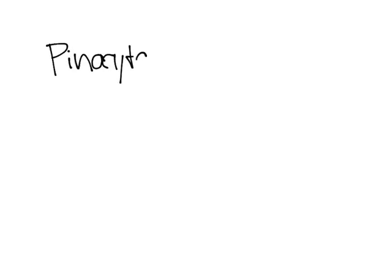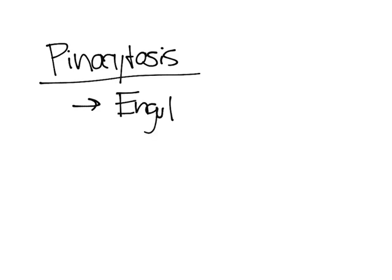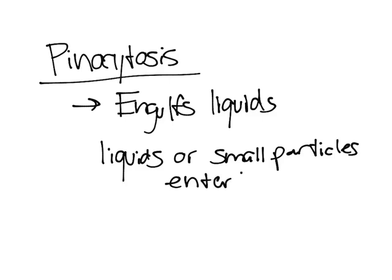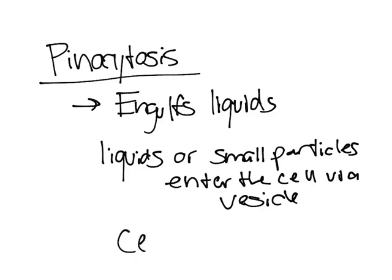Another type of endocytosis is pinocytosis. This is the same process as phagocytosis, but the key difference is that it engulfs liquids — it's the process in which liquids or small particles enter the cell via a vesicle. It's also commonly known as cell drinking.